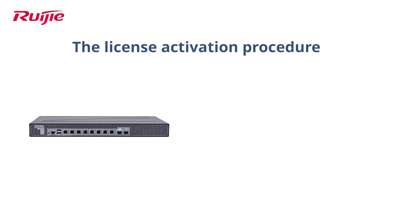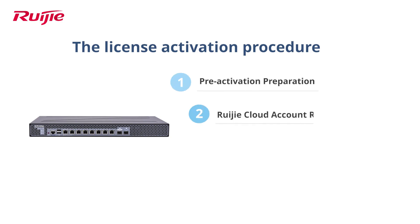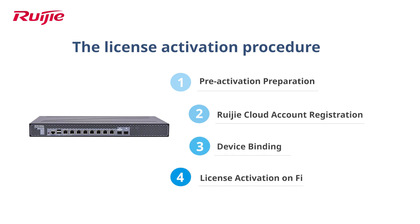The following describes the online license activation procedure. The license activation procedure includes pre-activation preparation, RUIGIA Cloud account registration, device binding, and license activation on the firewall web UI.